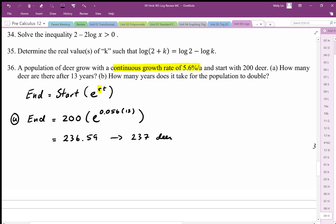For part b of this problem, it says how many years does it take for the population to double? We could arbitrarily say the end value is double the start value, or we could use an initial 200 and say that the end value is 400.